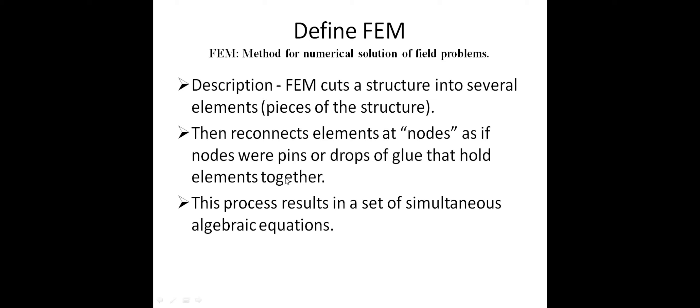Then we reconnect the elements at nodes — nodes are where pins and glue hold the elements together. Whatever elements are considered for dividing, they must have nodes. Node to node must be properly joined; if not, we reconnect. This process sets up simultaneous algebraic equations. Each node equation, each direction of node equation — linear or non-linear — all linear equations are converted to algebraic equations, then converted to matrix form, and finally solved for unknown values. That is the finite element method procedure fundamental concept.